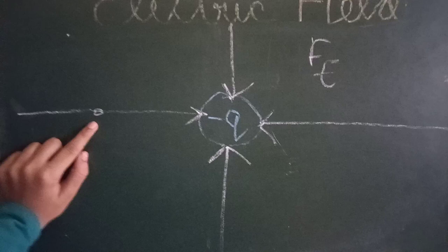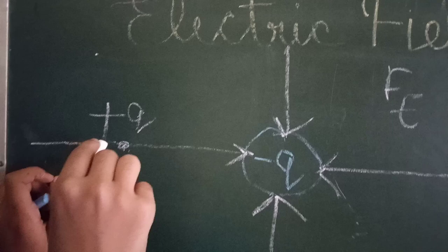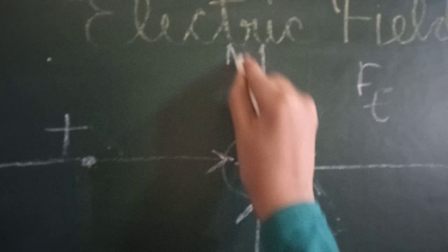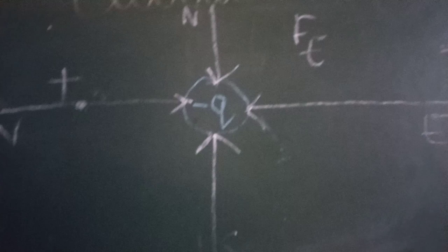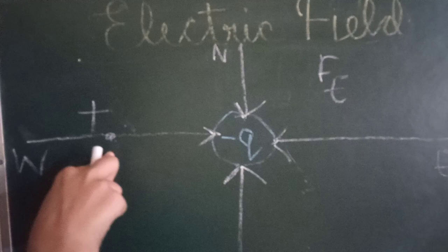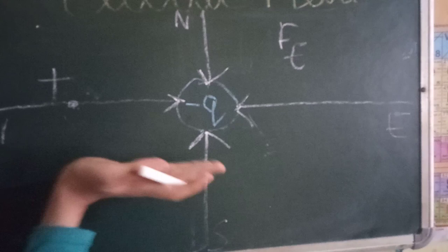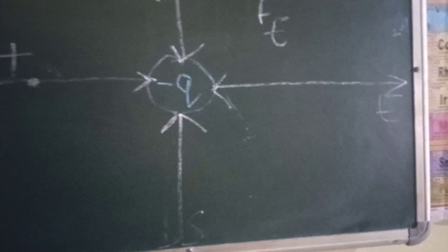If we keep a small test charge — which is always positive — at different positions around the negative charge, for example using compass directions: if we place the test charge in the west direction, it will act toward the charge in the east direction. If we keep it in the east direction, it will act towards the center of the charge in the west direction. In the case of a negative charge, the electric field is in the opposite direction toward the center.